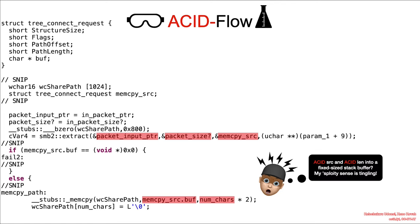The WC share path variable is of a fixed size. The attacker can specify any size, any data to write to a fixed size buffer on the stack. This is the standard definition of a stack buffer overflow.